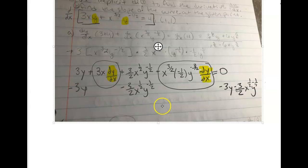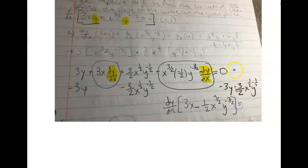Factoring out the dy over dx, I'm left with 3x minus 1 half x to the 3 over 2y to the minus 3 over 2. Then I'm going to divide through both sides by that term, and I'm going to get dy over dx by itself. Hopefully that explains what's going on there.